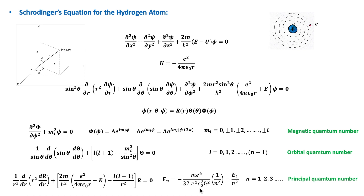In the previous videos of quantum mechanics, we have seen how Bohr's semi-classical model is applied to the hydrogen atom. This video includes the analysis of the hydrogen atom with the full quantum mechanical model.